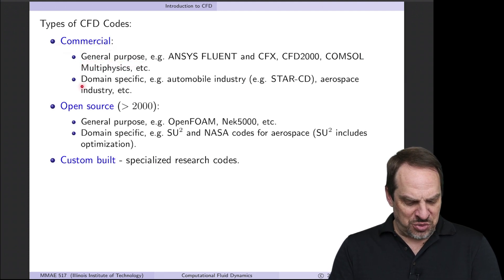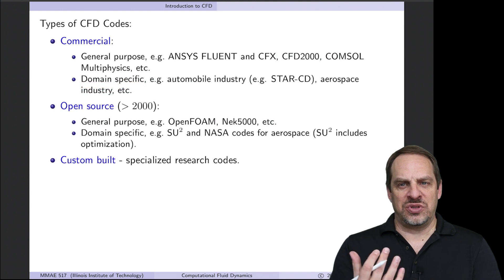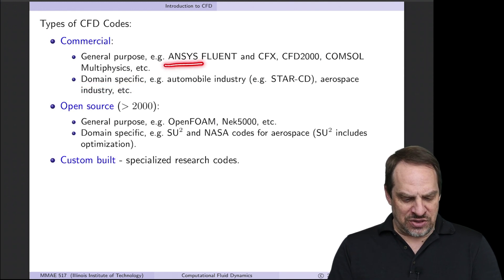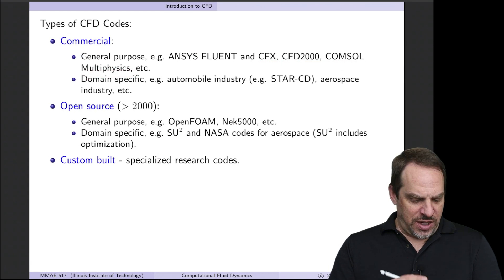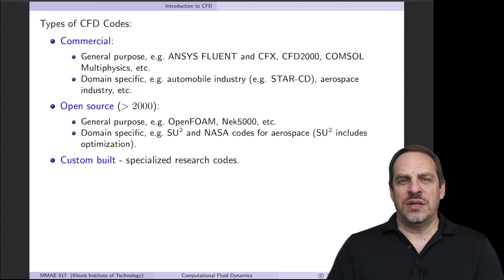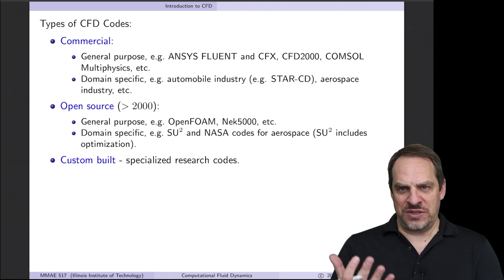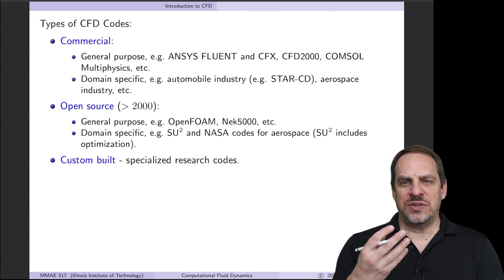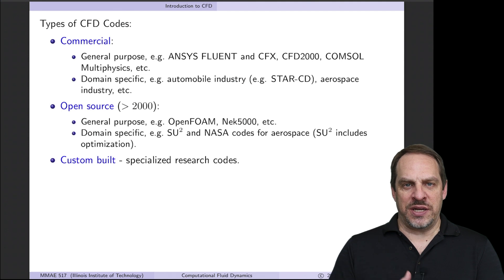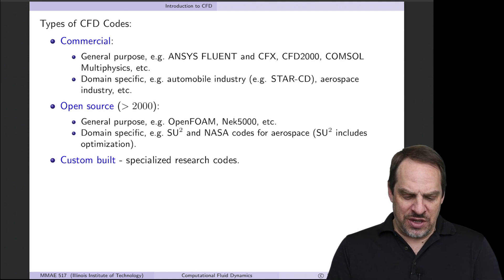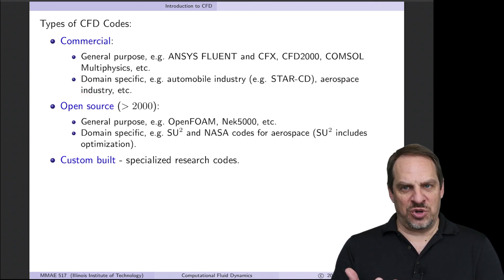Let's start with commercial codes. There are general purpose codes and domain specific codes. General purpose codes are things like ANSYS Fluent, CFX, CFD 2000, COMSOL Multiphysics. Then there are domain specific codes. In the automobile industry, for example, Star CD is optimized for applications in the automotive industry. It's still basically a CFD code, but it's set up in a way that's easier to apply in automotive industrial applications. Aerospace has its own set of domain specific codes, some commercial, some open source.